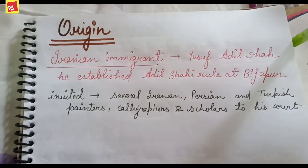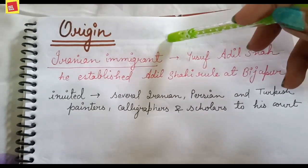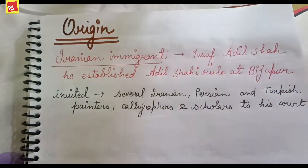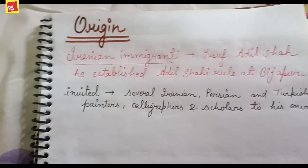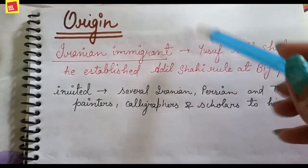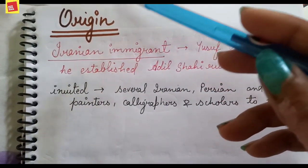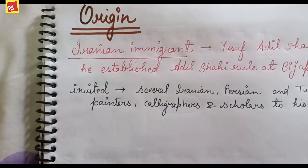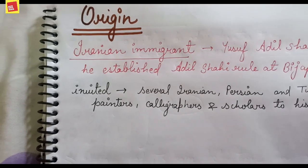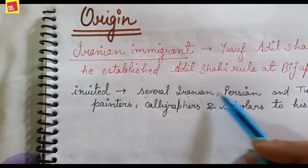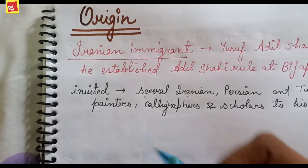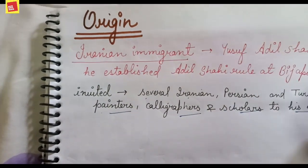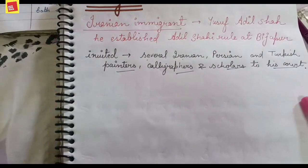An Iranian immigrant named Yusuf Ali Shah established the Adil Shahi rule at Bijapur. He was very fond of paintings and had great interest in the art. He invited several Persian, Iranian, and Turkish painters, calligraphers, and scholars to his court so that they could work under him.